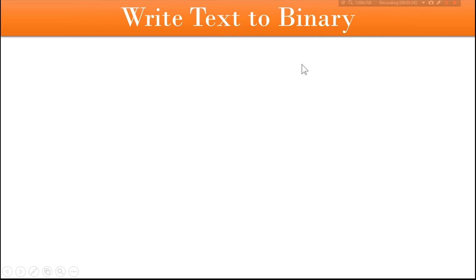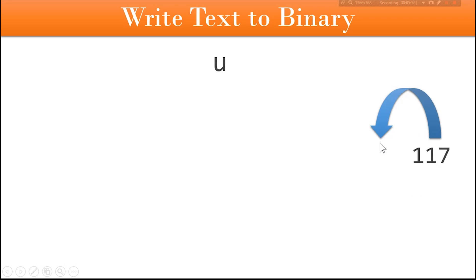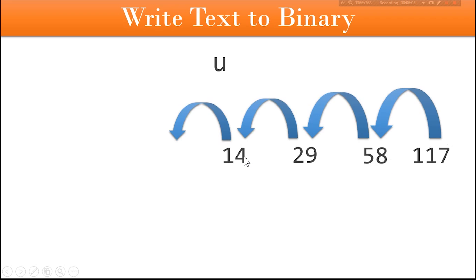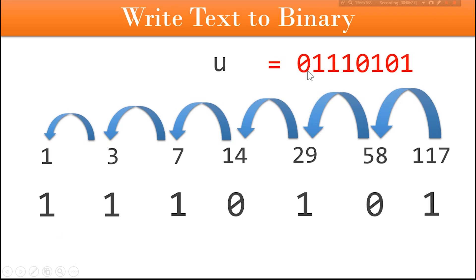Now let's go the other way: from text to binary. Suppose we have the letter lowercase u and want to convert it to binary. Open the ASCII table and look for lowercase u — its value is 117. Write 117, divide by 2 repeatedly: 58, 29, 14, 7, 3, 1 — stop at 1. Wherever there is an odd number put 1, wherever even put 0, just like in decimal conversion. You will get the binary number 01110101. The text conversion and decimal conversion methods are always similar.